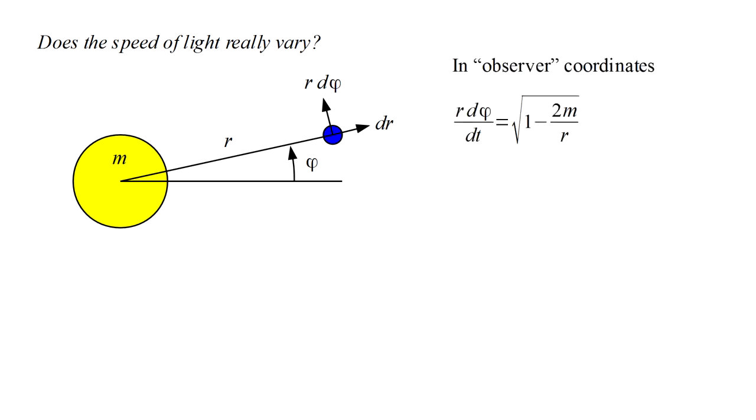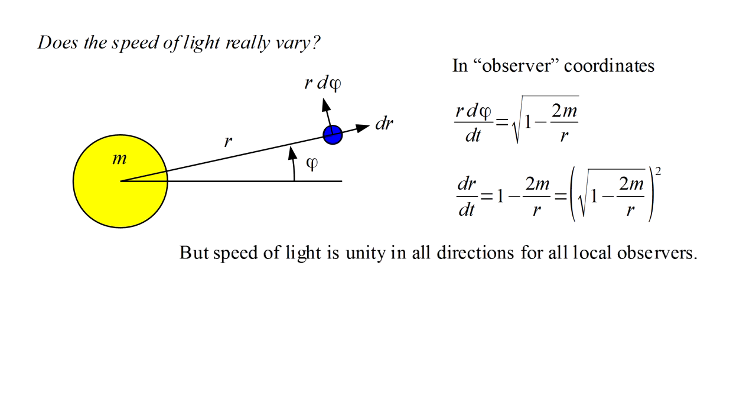In part a, we saw that the speed of light in the longitude direction is the Schwarzschild factor, the square root of one minus 2m over r, which is less than one. In the altitude direction, the speed of light is the square of this.